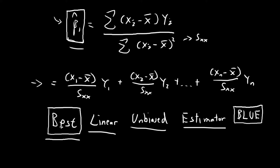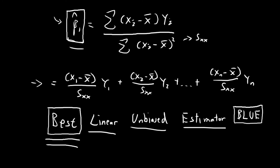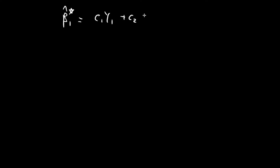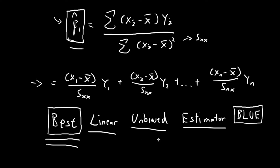Now in this video I'm going to show you why this estimator is called the best. In order to prove my claim, I'm going to first consider an arbitrary linear unbiased estimator for beta 1. I'm going to call this estimator beta 1 hat star, and it is going to be equal to c1 times y1, where c is a constant, plus c2 times y2, all the way to cn times yn. You can see that this estimator is a linear estimator, and I'm also going to assume that this estimator is unbiased.